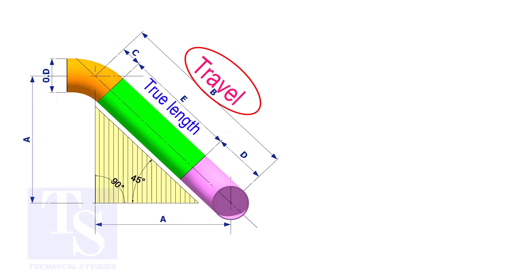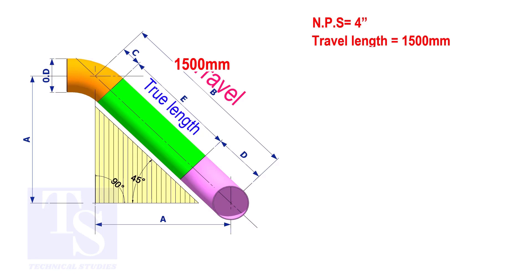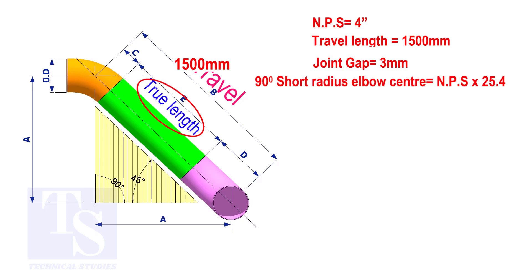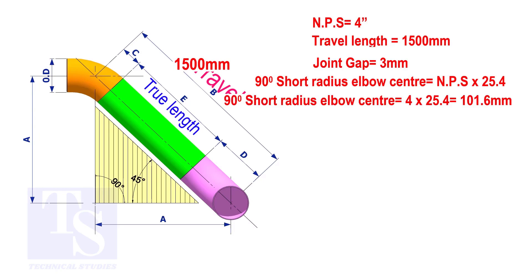Assume that the elbows are short radius. Nominal pipe size is 4 inch. The travel length is 1500 millimeters. The joint gap is 3 millimeters. To calculate the elbow center of a 90 degree short radius elbow, multiply the nominal pipe size by 25.4. The answer is 101.6 millimeters.